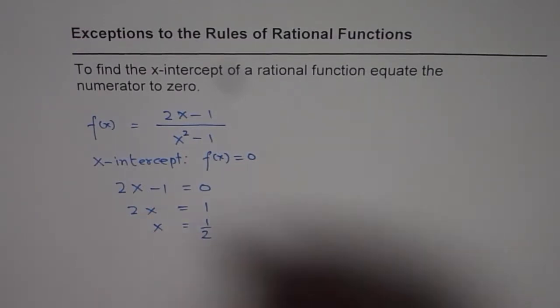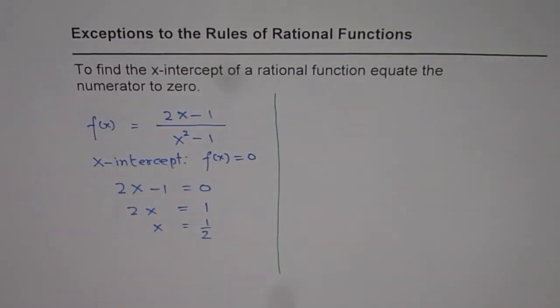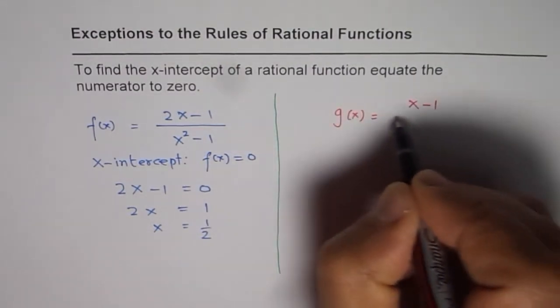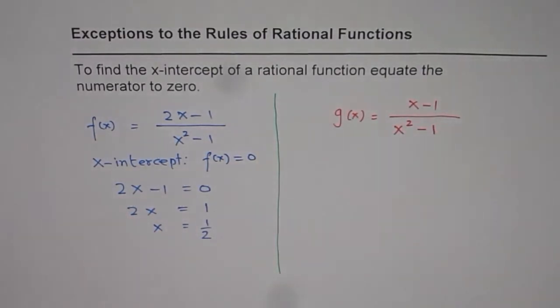That is correct. But this rule cannot be applied always. For example, let me give you a second case. g(x) equals, let us say, x minus 1 divided by x squared minus 1. In that case,